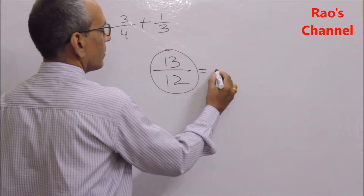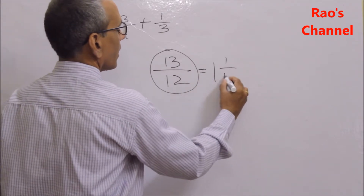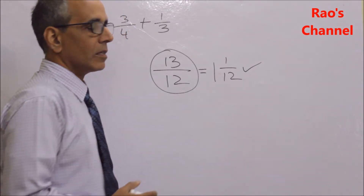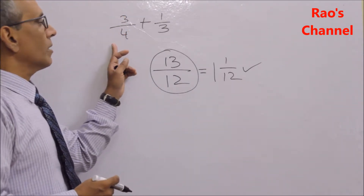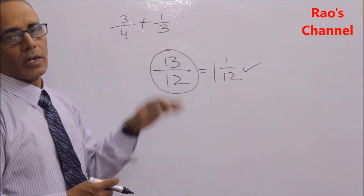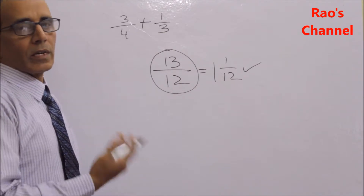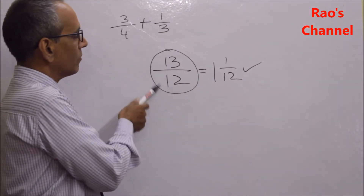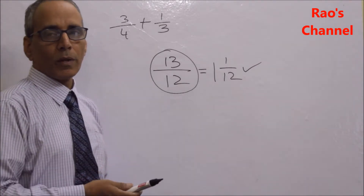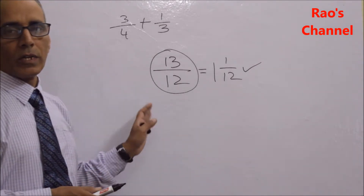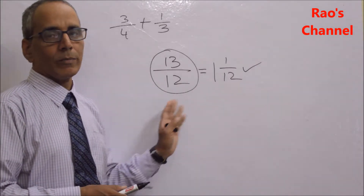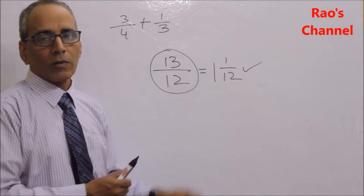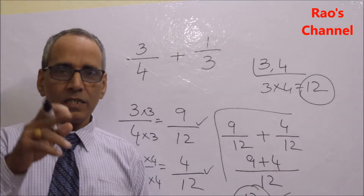13 by 12 is the sum of 3 by 4 and 1 by 3. This is an improper fraction, so it will be converted into a mixed fraction to get the final answer: 1 and 1 by 12. That is the sum of the unlike fractions 3 by 4 and 1 by 3, converted to like fractions using LCM. Improper fractions are always converted to mixed fractions for the final answer. Let's see one more example.